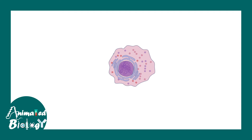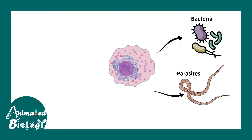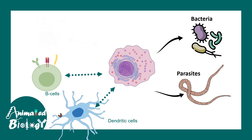Mast cells can also eliminate bacteria as well as parasitic infections. They have the capability to interact with dendritic cells, B cells, T cells, and others. By secreting cytokines, they can modulate the function of these immune cells.